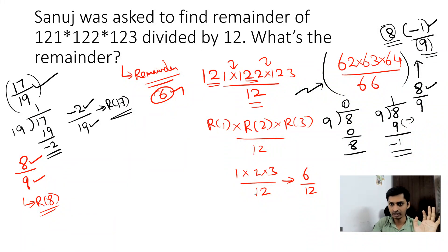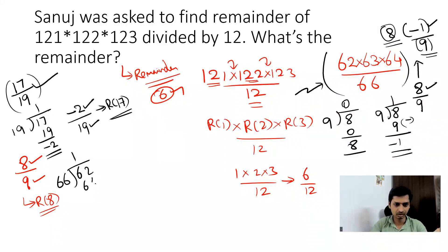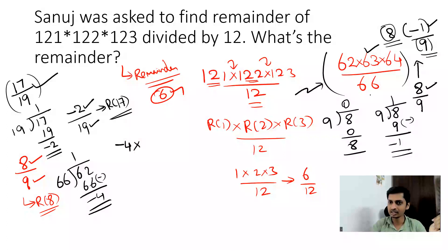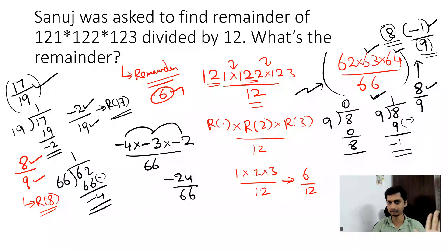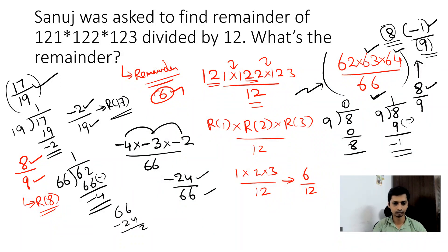Now applying this to 62 × 63 × 64 ÷ 66: divide each by 66. Negative remainder of 62 ÷ 66 is −4. Negative remainder of 63 ÷ 66 is −3. Negative remainder of 64 ÷ 66 is −2. So we compute (−4) × (−3) × (−2) = −24. Now we convert: −24 + 66 = 42.